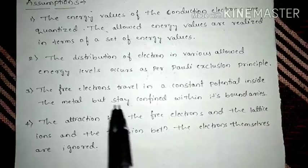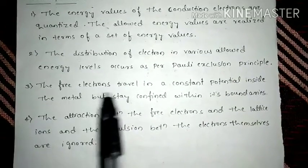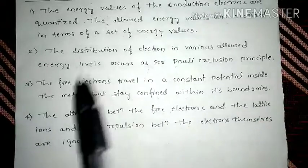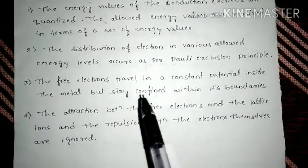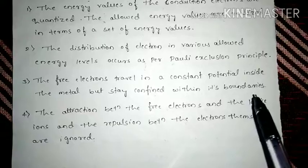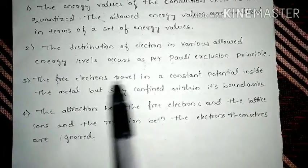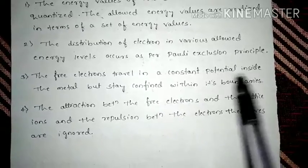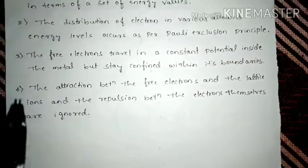And then, the free electrons travel in a constant potential inside the metal, but stay confined within its boundaries. So they can travel anywhere in a constant potential, but they will be always confined within the boundaries.